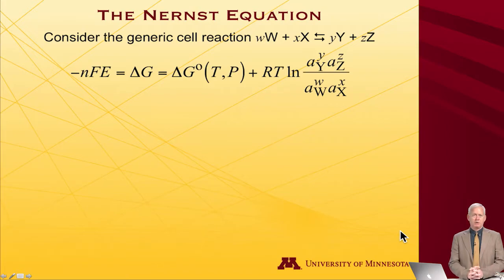And it's instructive to now look at this in the context of a specific reaction. So we'll take a generic cell reaction. W moles of W plus X moles of X are in equilibrium with Y moles of Y and Z moles of Z. It doesn't have to be two components on the left, two components on the right, it could be anything. Let's just pick one to work with.